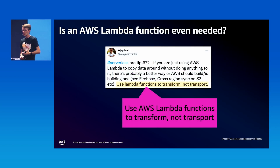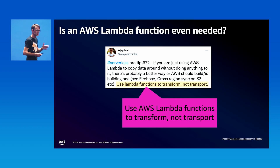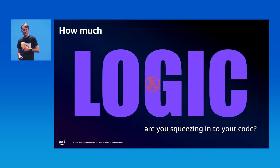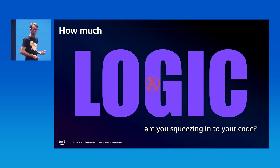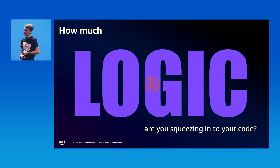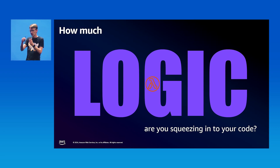On when to actually use a Lambda function, here's a great quote from one of the fathers of Lambda, A.J. Nair: you should only use a Lambda function when you're actually transforming the data, not just to transport it. Another way to think about it is how much logic are you squeezing into your Lambda function. Are you adding more and more functionality, more if-then-else, whole decision trees in your code? That becomes really hard to manage. That's what we call a Lambda lith — it's large and unwieldy. A good indication is the level of indentation in your code: with every level, there's more to test, more to secure, more complexity.